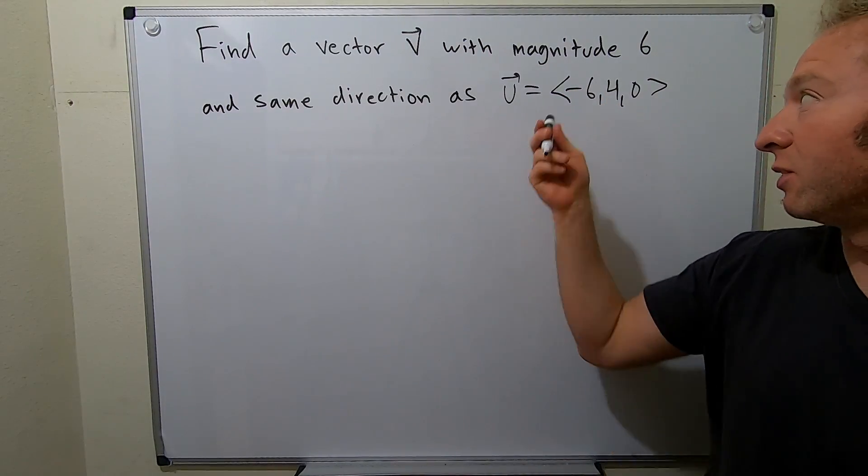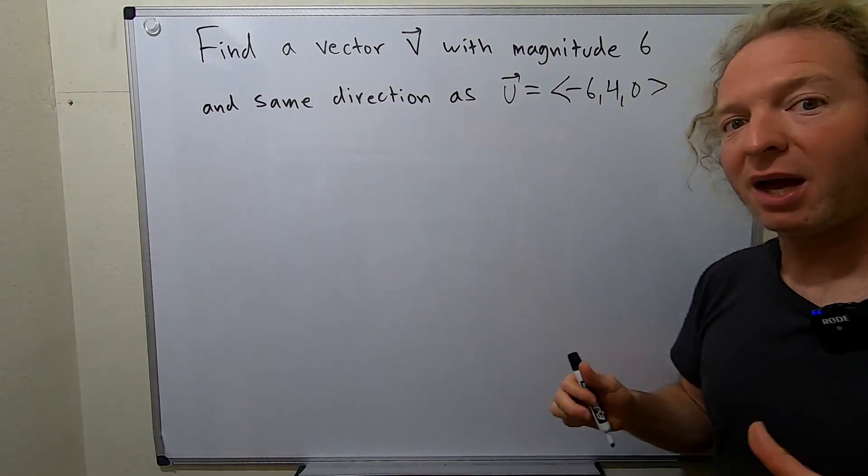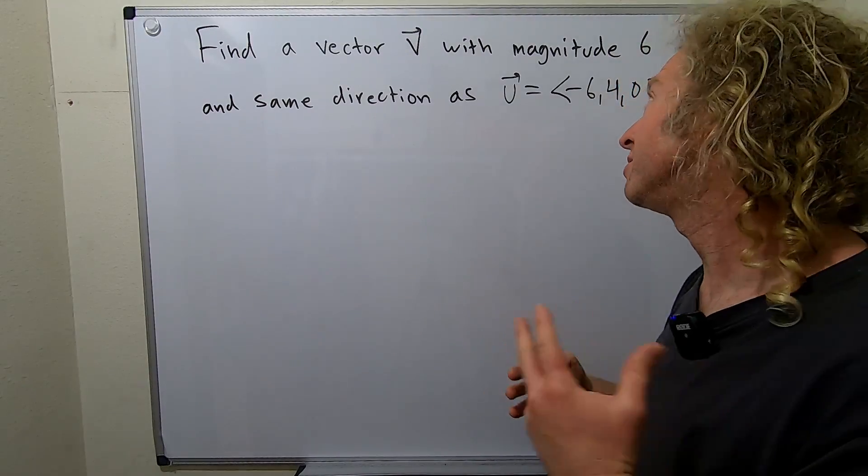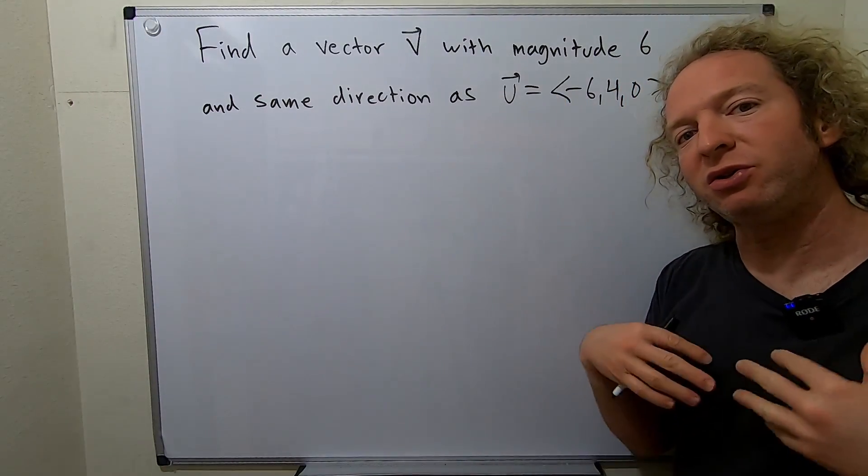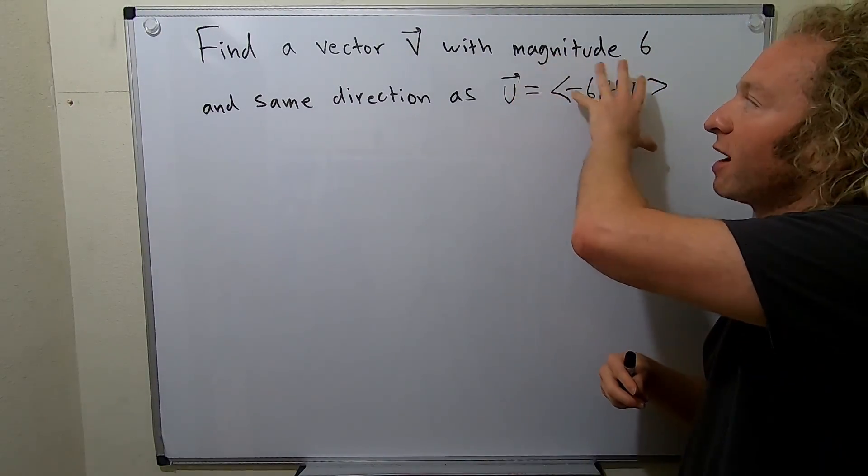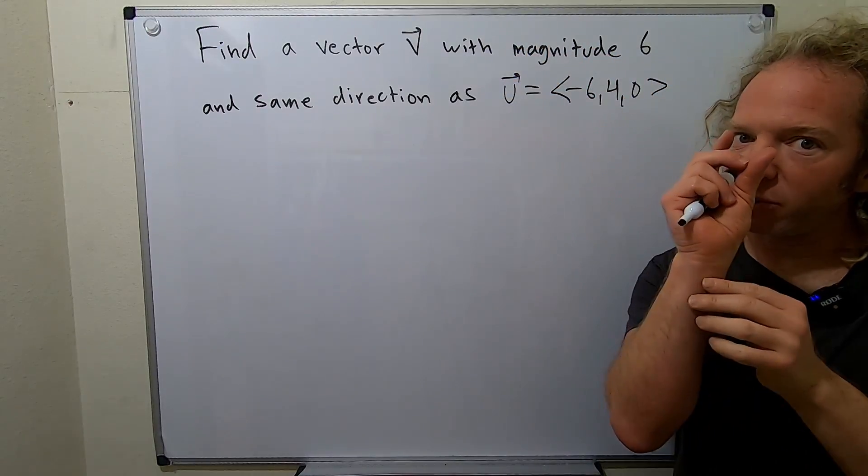So the idea is we're basically going to take this vector here and we're going to normalize it. So what that means is that we're going to turn it into a unit vector. Once we have this as a unit vector, it's a vector with length 1, we're going to multiply it by 6 and then we'll have the answer.